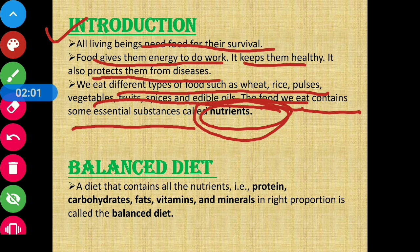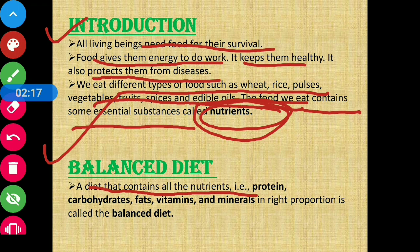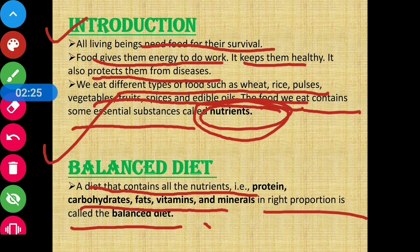We eat different foods like rice and pulses. What we eat is called a diet — the proper meal we are consuming. So what is a balanced diet? A balanced diet is a diet that contains all nutrients — that is protein, carbohydrate, fats, vitamins, and minerals — in the right proportion.